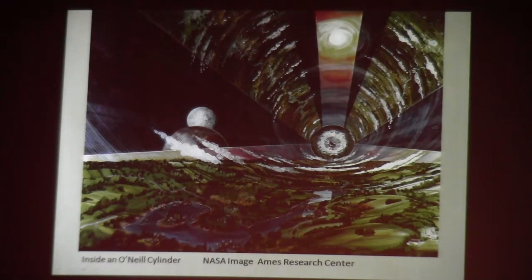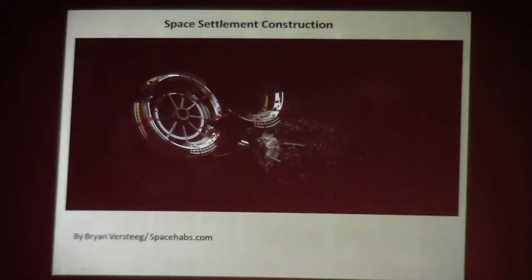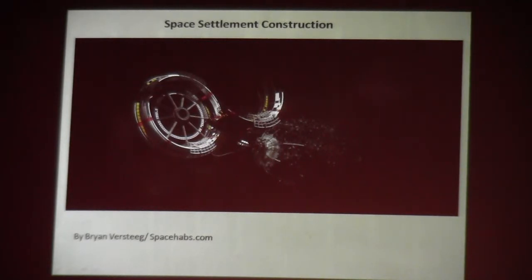This is an early image of what an O'Neill cylinder would look like from the inside. Space settlements can be pretty comfortable places to live. Here's an image of how you might create a space settlement — just suck the resources and materials off an asteroid, run it through a fabricator, and you can build almost an unlimited number of space settlements. This is from an outfit called Space Habs — that's a good source to check out on the internet.